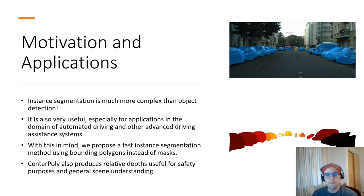So with this in mind, we propose a fast instance segmentation method that uses bounding polygons instead of masks to speed up the process. And also, in order to better segment the overlapping objects, we propose a relative depth prediction that is trained with weak annotations.